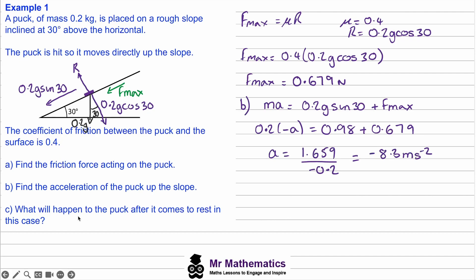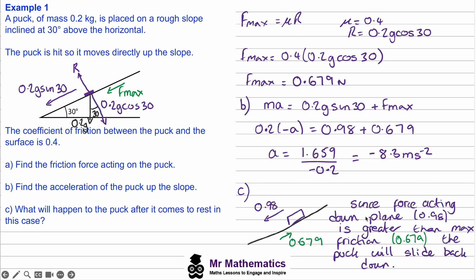For part c, what will happen to the puck after it comes to rest? The puck moves up the slope, then stops — will it slide back down or will friction hold it in place? The weight component down the slope is 0.98 N, which is greater than the maximum friction of 0.679 N, so the puck will slide back down the slope. This is an example of how friction can change direction.